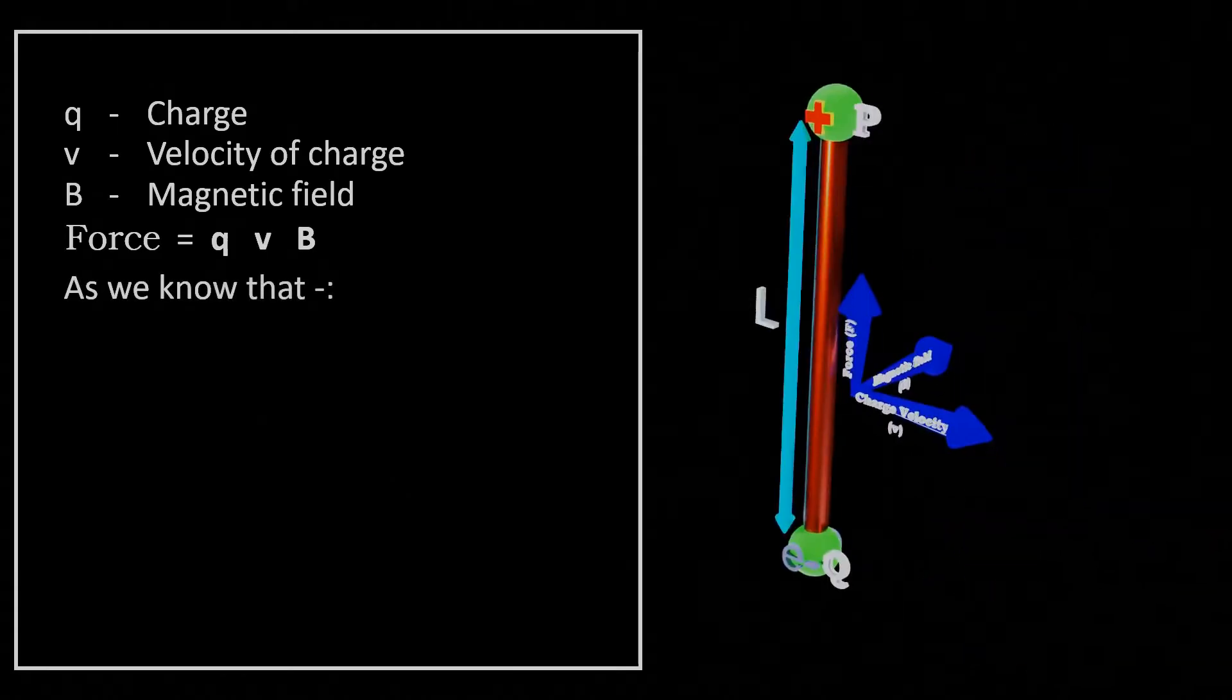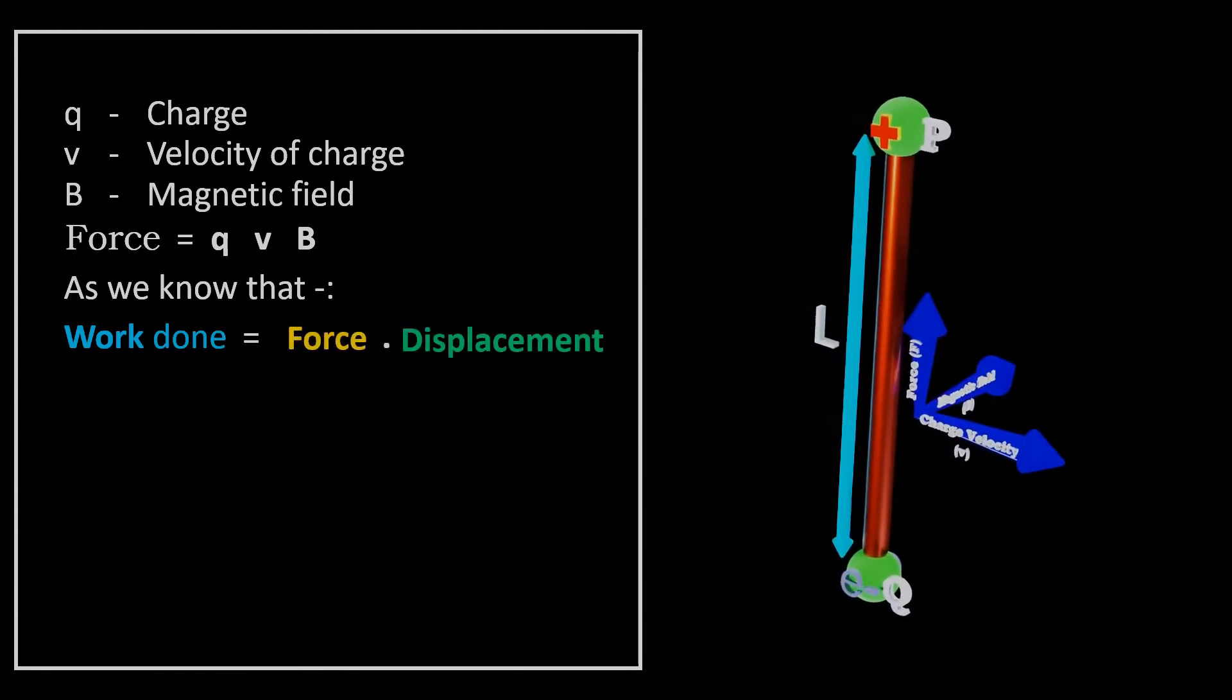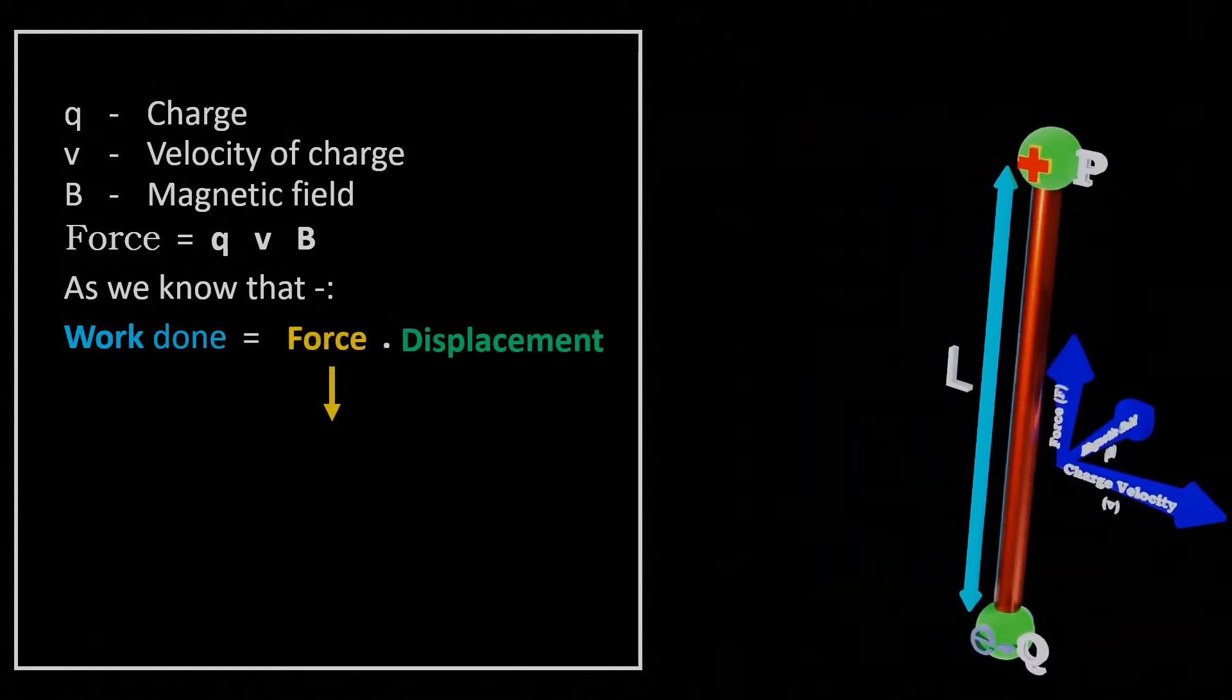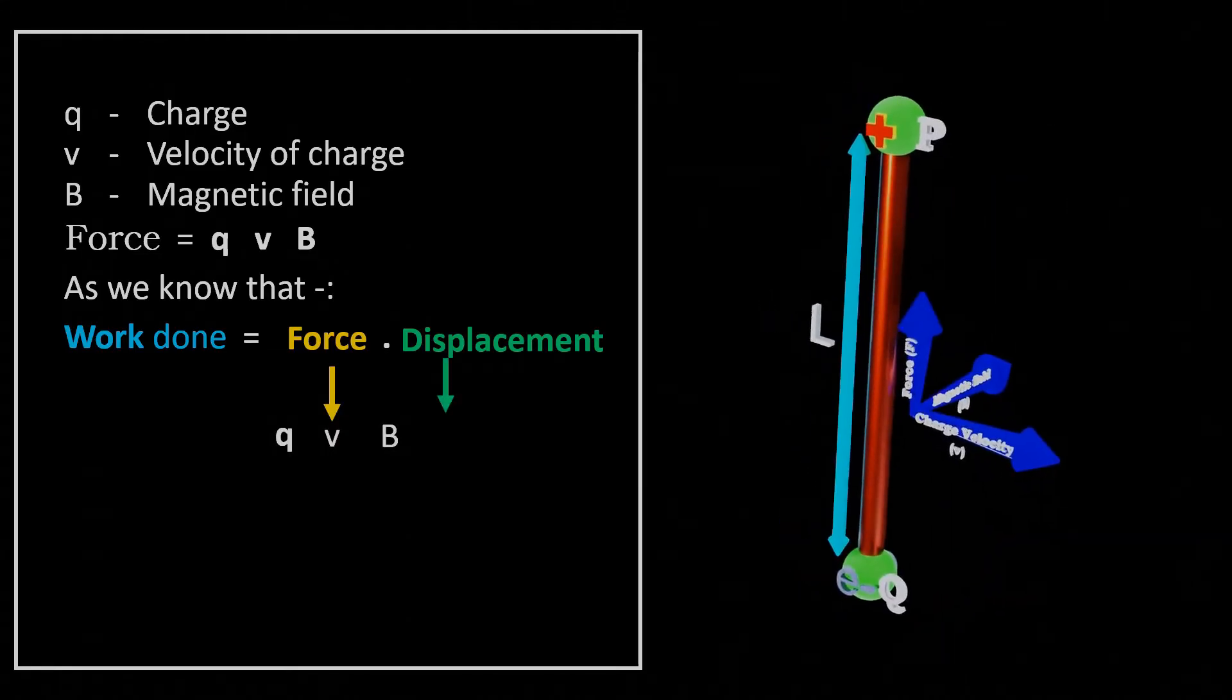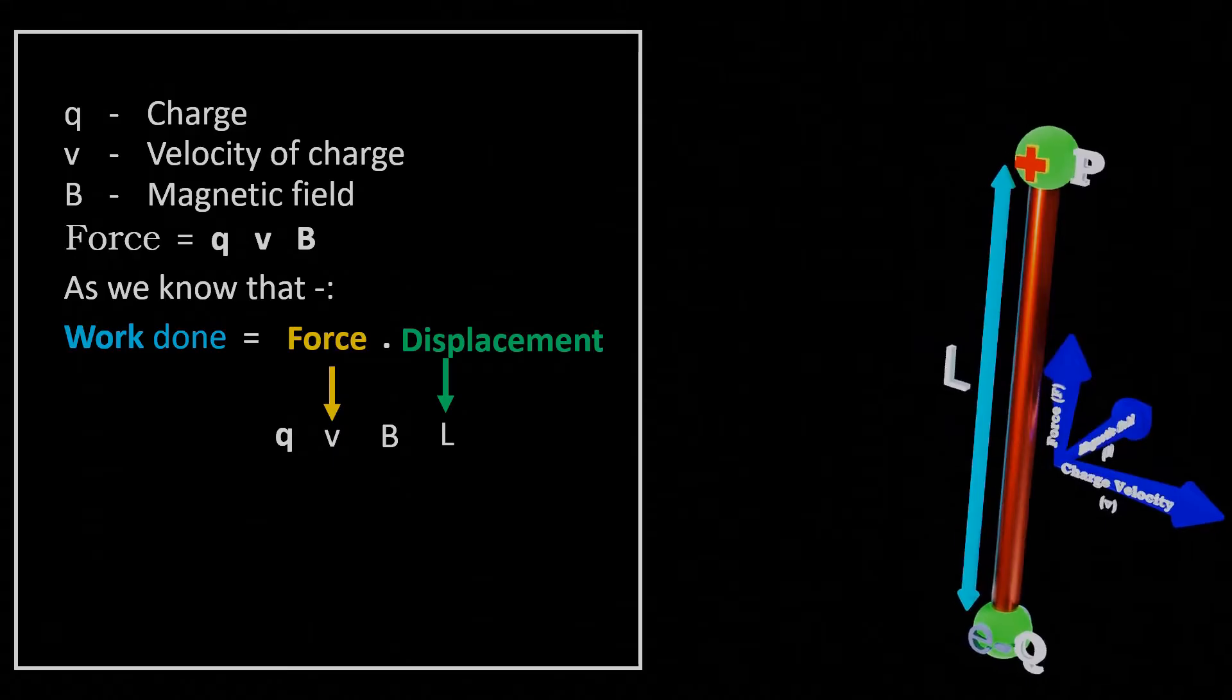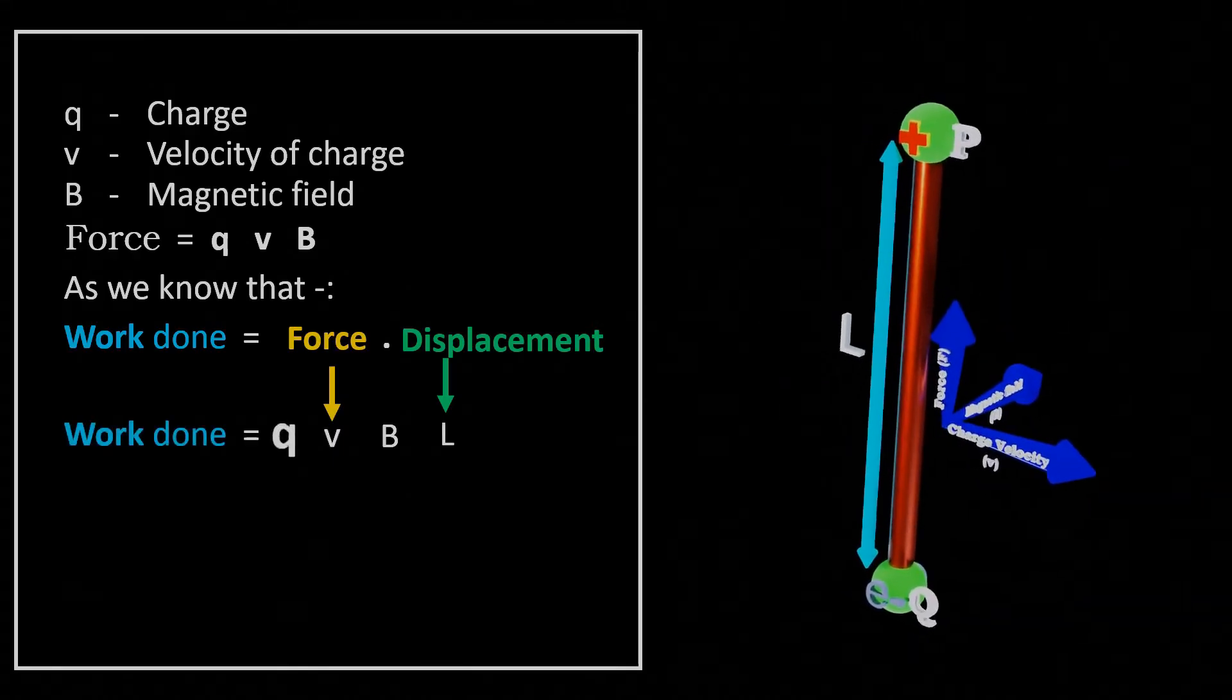As we know that, work done is equal to force into displacement. Here the force on the charge is QVB, which displays the charges along the length of conductor L. So, we get an equation of work done by the charges as QVBL.